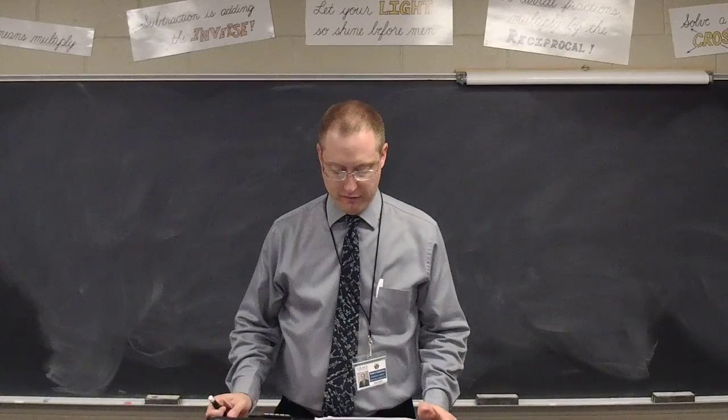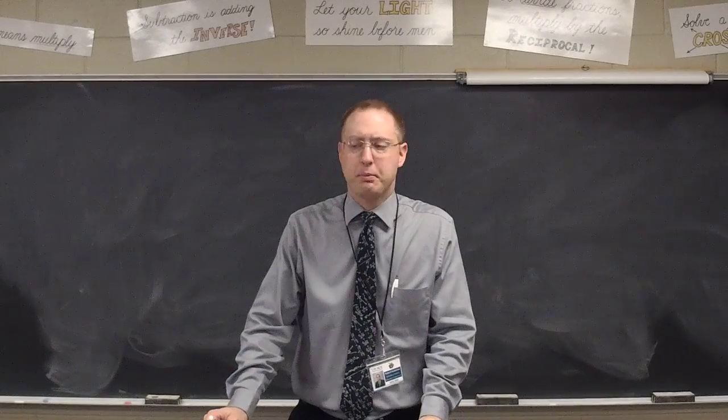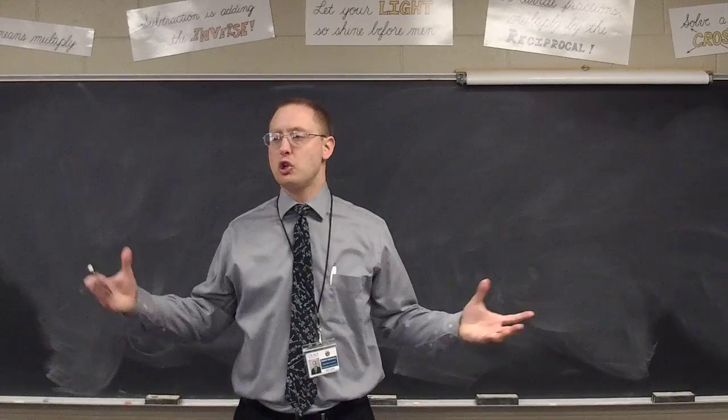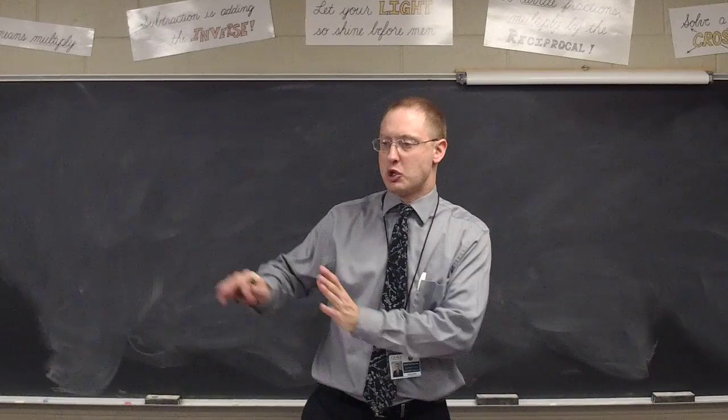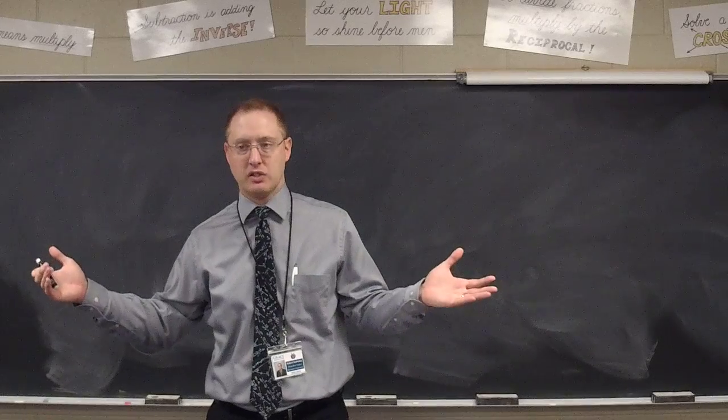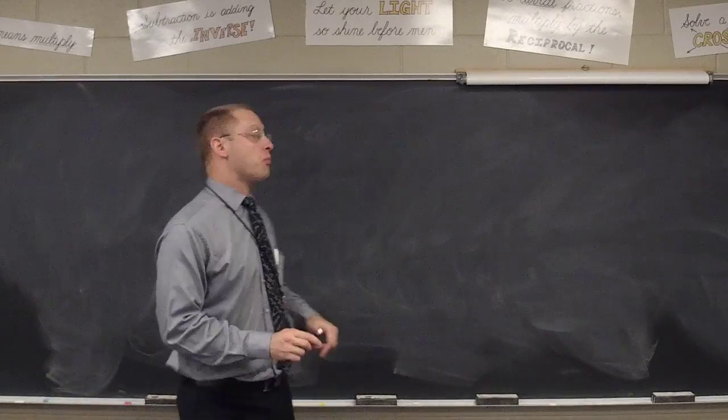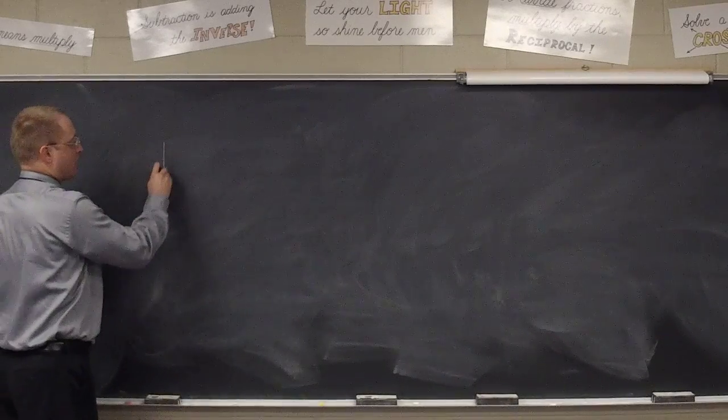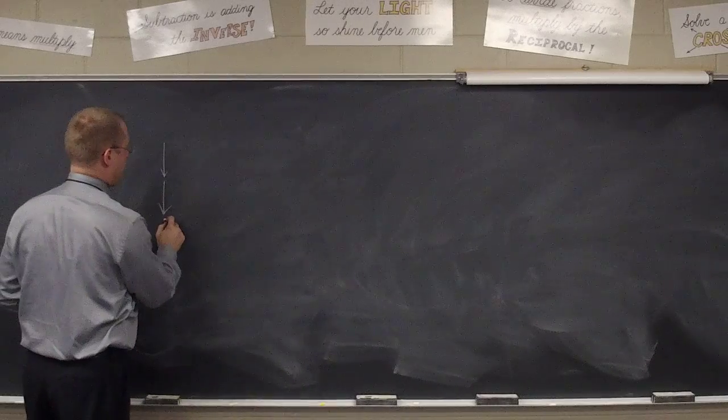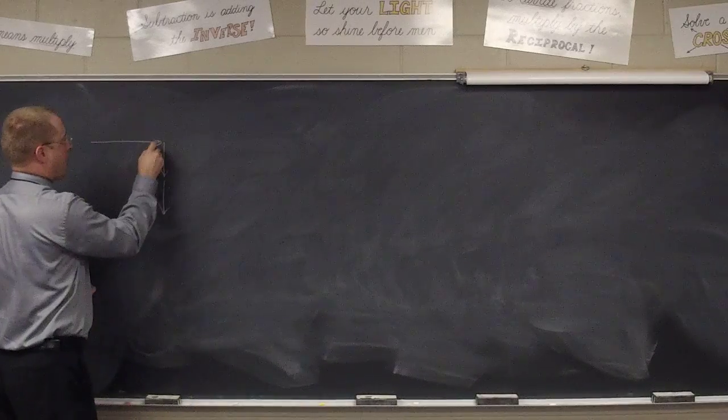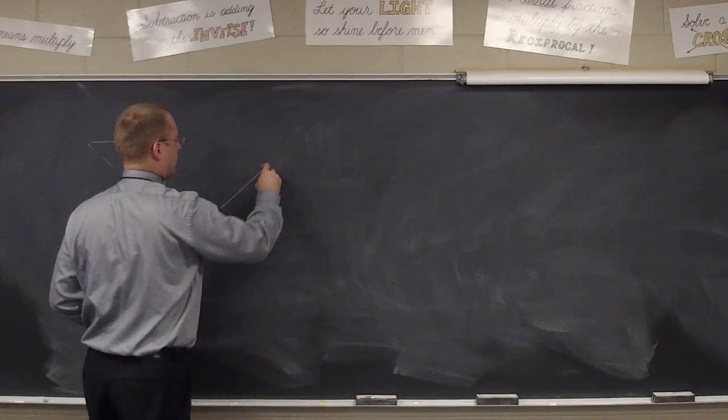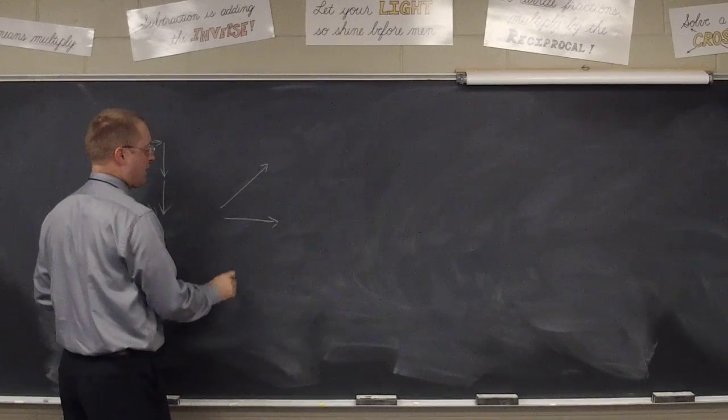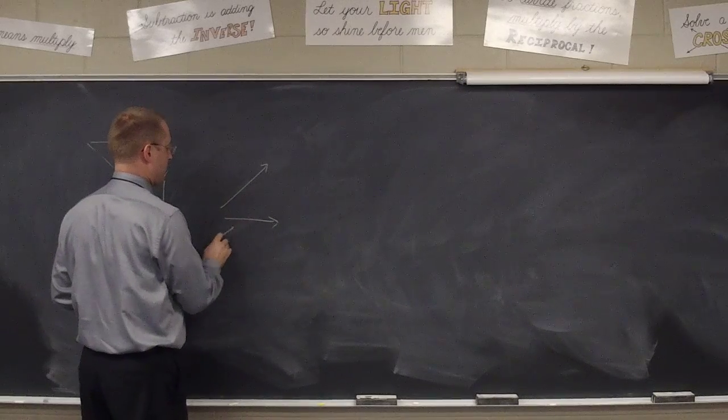Next thing you need to know is we've been talking a lot about vector composition, where we've taken two vectors and composed them into a single resultant. We've taken two concurrent vectors, this happens, this happens, what's the outcome? We even did one with three, you might remember, where there was the current going this way, and the wind going this way, and the boat was going this way, and the resultant was here. What if we had three vectors, and one was going this direction, one was going this direction, and one was going that direction?